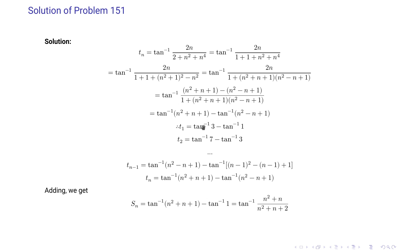Now we substitute n equal to 1, 2, 3 up to n. T1 becomes tan inverse 3 minus tan inverse 1. T2 becomes tan inverse 7 minus tan inverse 3, and so on. The tan inverse 3 cancels, tan inverse 7 cancels, and each term cancels with the previous. What remains is tan inverse(n squared plus n plus 1) and tan inverse 1. So the final sum is (n squared plus n) divided by (n squared plus n plus 2).